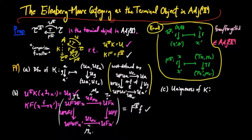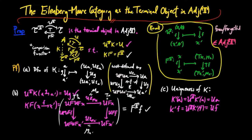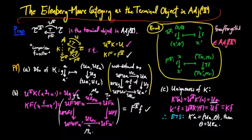Finally, for uniqueness of K, if K' is another morphism in the category of T-inducing adjoint situations, we must have K'(A) equal to U^T(K'(A)), which equals U(A), by the definition of a morphism in the category of T-inducing adjoint situations. Also, we must have K'(F) equal to U^T(K'(F)), which equals U(F), which equals K(F). So the only structure left to question is the T-action of K'(A). Therefore, it is enough to show that if K'(A) equals U(A) with T-action theta, then theta must equal U(Epsilon_A).